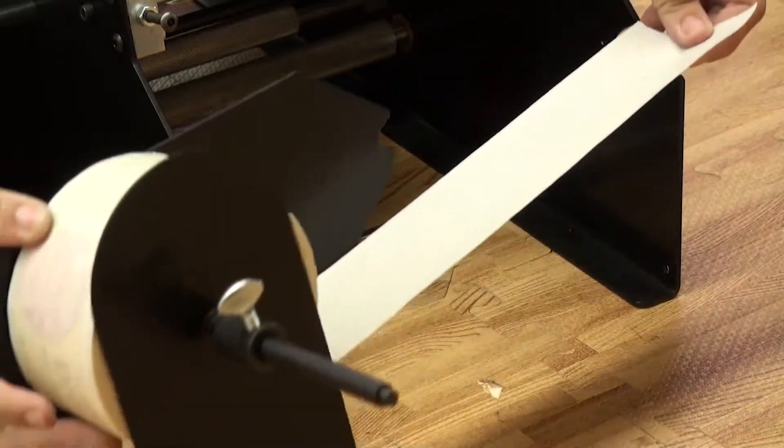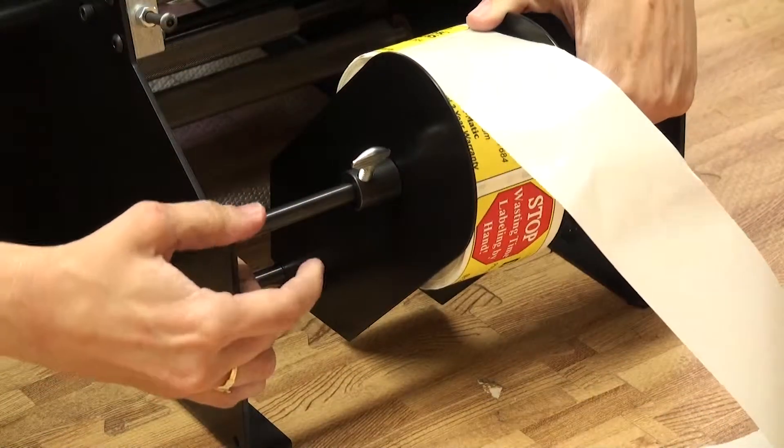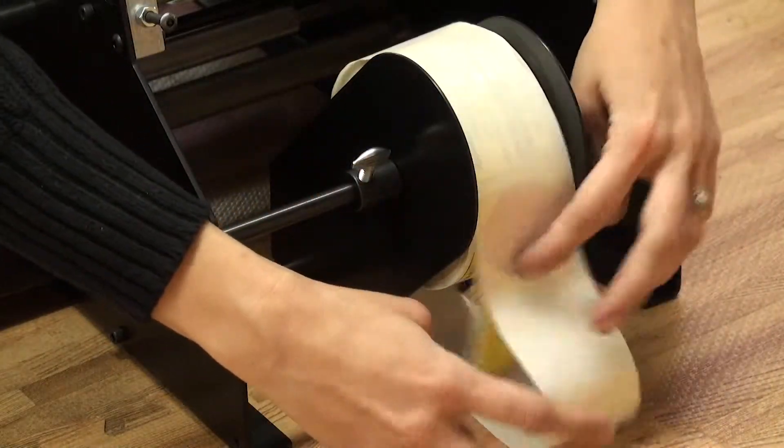To load the labels, make sure they are facing upside down and going off the back of the roll. The notches on the end of the roll guide should slide onto the chrome rod at the bottom of the machine.